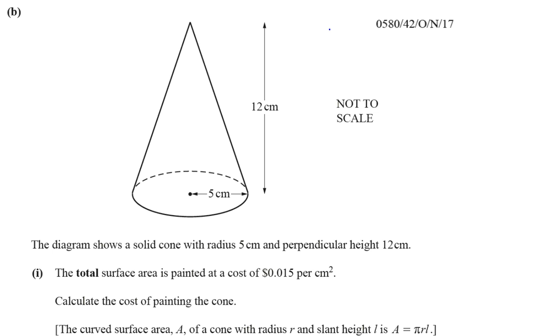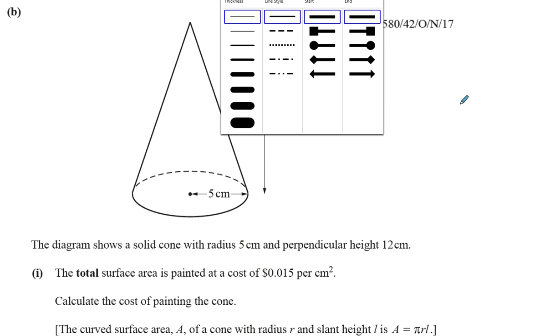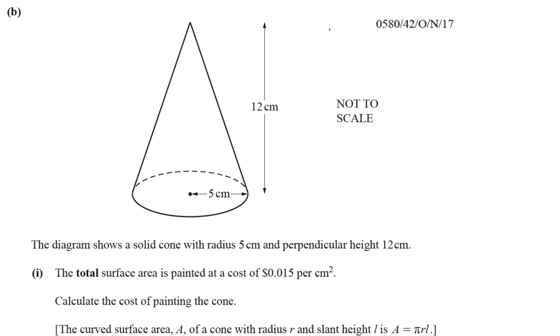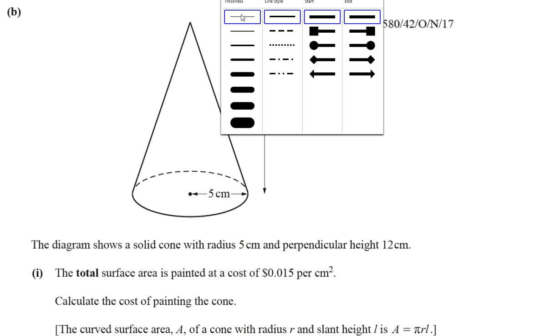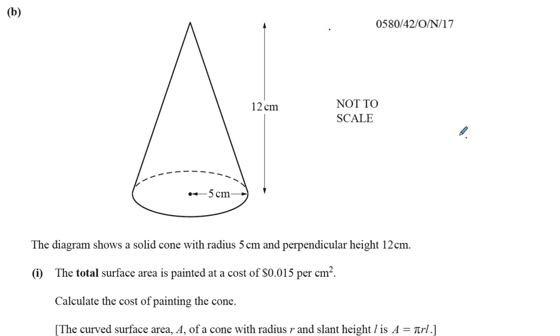It's a question about surface area and volumes. Part 1 is about surface area and cost of painting something. We need to calculate the cost of painting this cone, which has a radius of 5 cm and a vertical height of 12 cm. The total surface area is painted at a cost of $0.015 for every square centimeter, and we've got to calculate the cost of painting the whole cone.